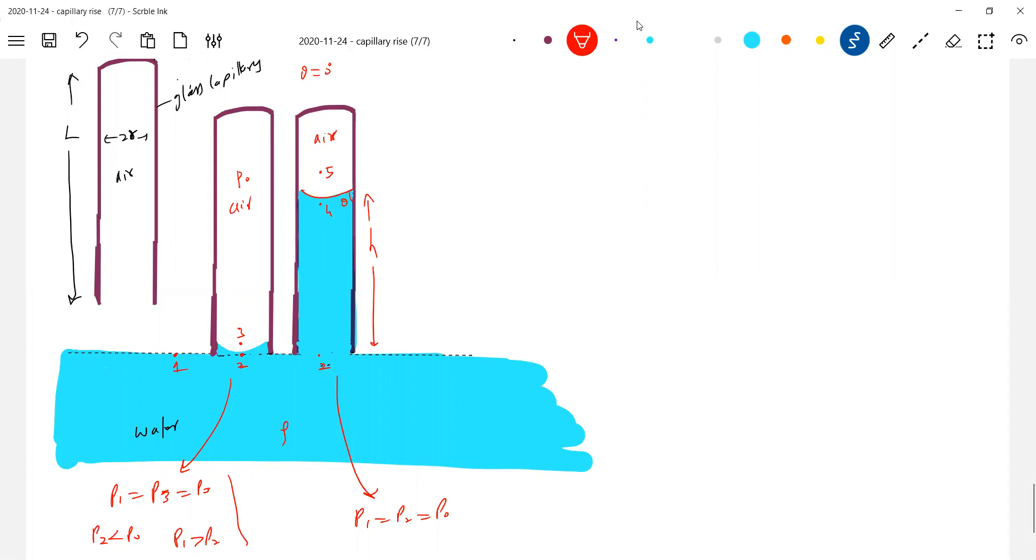What happened? The air which was there in the column, the air which was present in this column of length L, it got compressed and it will undergo isothermal process. Air undergoes isothermal process. Really, we have to fight with the ideas here. If the air undergoes isothermal process, what shall we write?